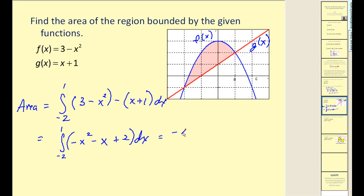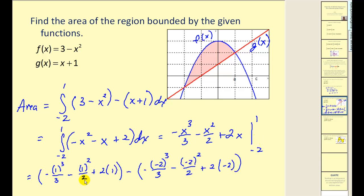Using the power rule, we'd have negative x cubed divided by three minus x squared divided by two plus two x. We'll evaluate this at one and negative two. If we sub in positive one it would look like this. If we subbed in negative two it would look like this, and this simplifies to 4.5.